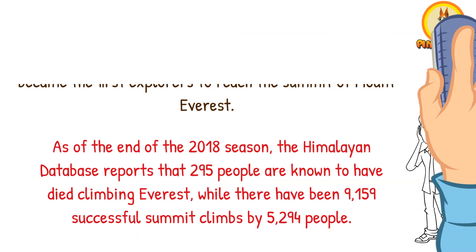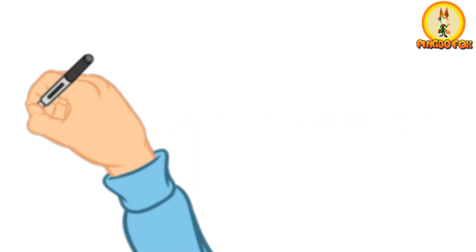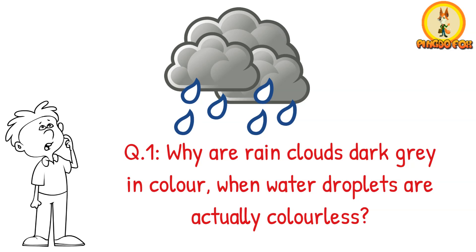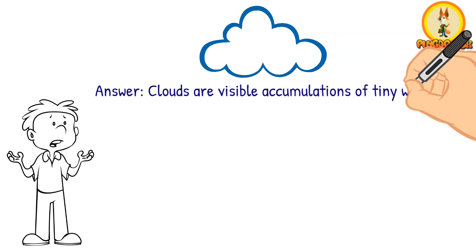Now back to question number one: why are rain clouds dark grey in colour when water droplets are actually colourless? Clouds are visible accumulations of tiny water droplets or ice crystals in the Earth's atmosphere.